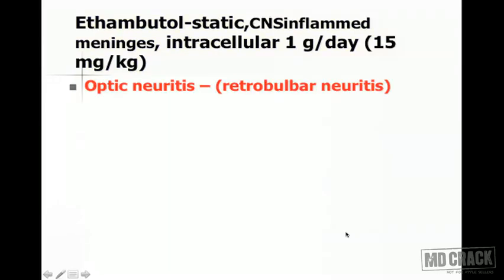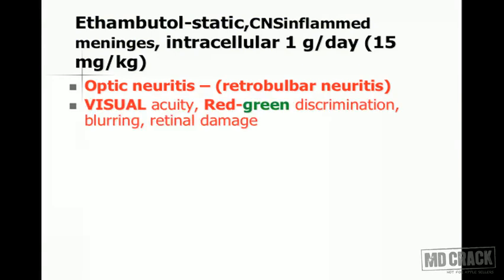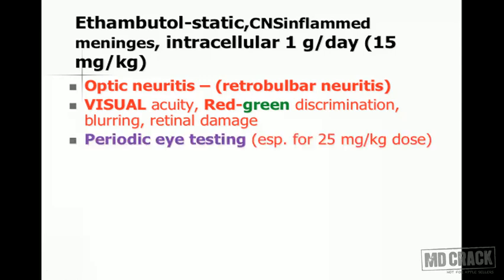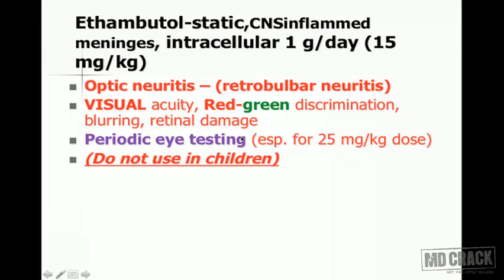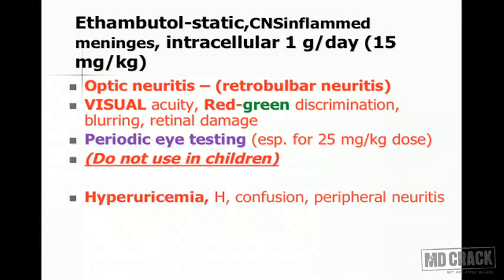Ethambutol produces optic neuritis and retrobulbar neuritis, causing reduced visual acuity, impaired red-green color discrimination, blurring of vision, and retinal damage. Patients must undergo periodic eye testing, especially at doses of 25 mg/kg. Ethambutol is contraindicated in children because they cannot reliably report visual changes.